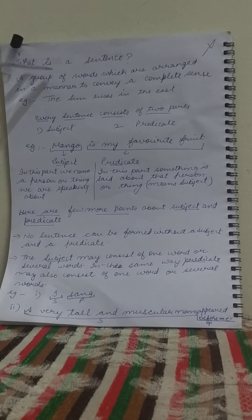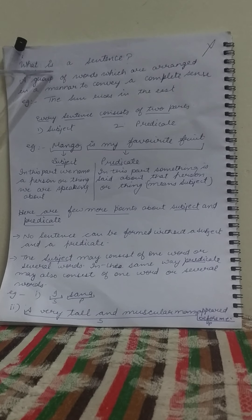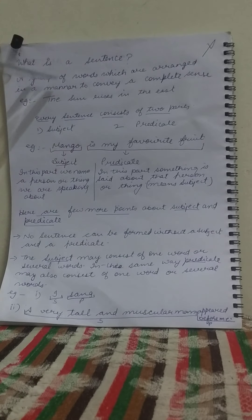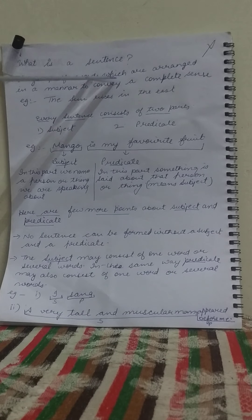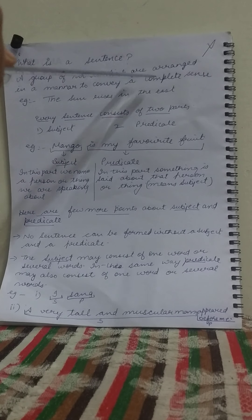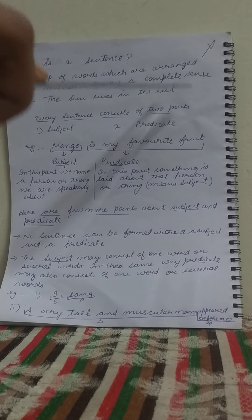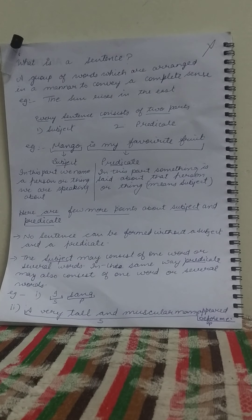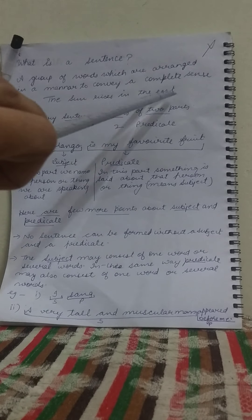Students, in the previous chapter we have studied about the sentence. What is a sentence? A group of words which are arranged in a manner to convey a complete sense — meaning a group of words coming together to give a complete sense or a specific meaning is called a sentence. For example: the sun rises in the east.